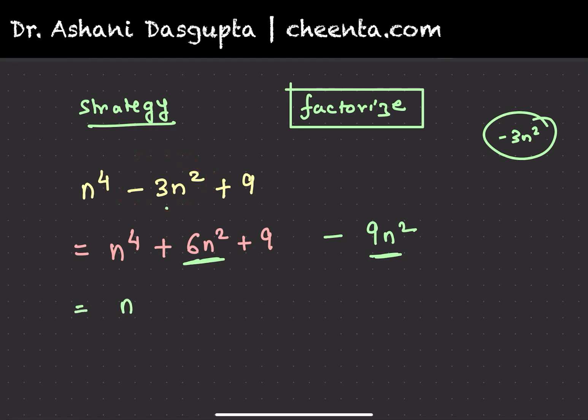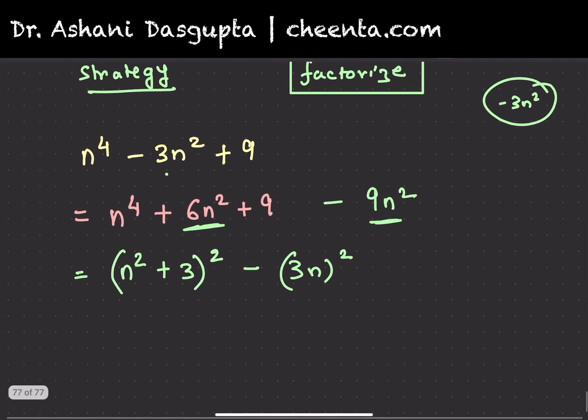And so, this one is (n^2 + 3)^2. This is minus (3n)^2. I will let you complete the problem. Can you find the final factorization?